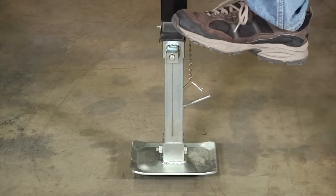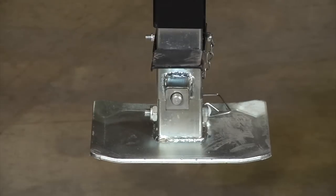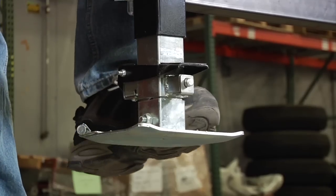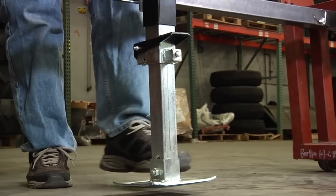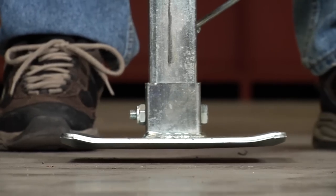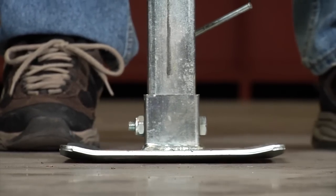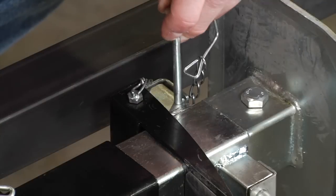A foot pedal release with auto return makes for quick height adjustments with minimal cranking, and the dual-action travel distance provides extended lift range to 32.3 inches. A pin secures the jack in selected positions for safety.